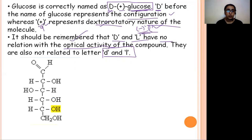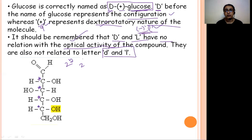This is glucose: CHO, then CHOH groups, with four chiral carbon atoms. How many isomers? Using 2ᴺ where N equals number of chiral carbon atoms: 2⁴ = 16 optical isomers. Remember this — 16 optical isomers of glucose.